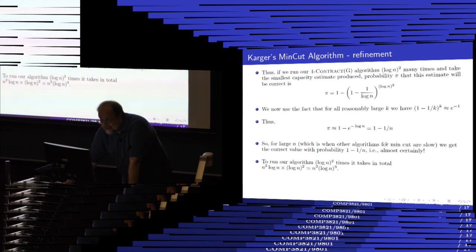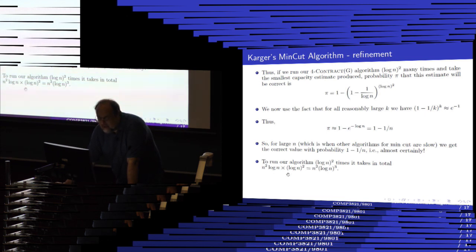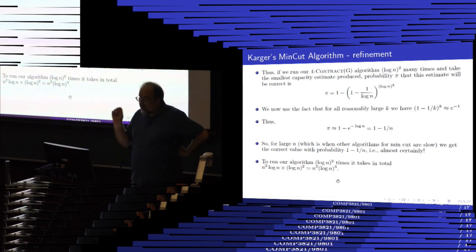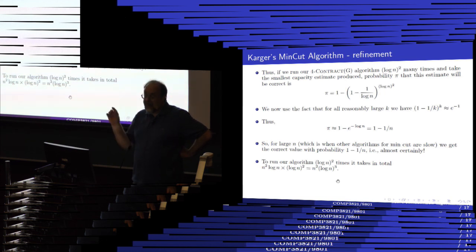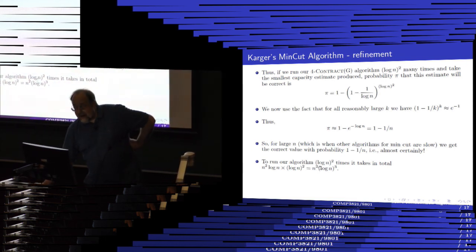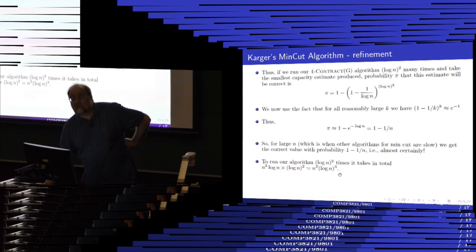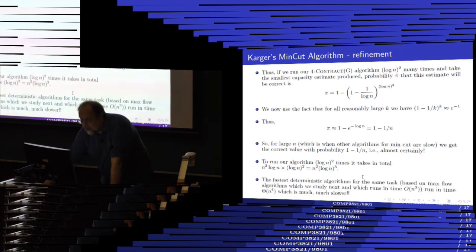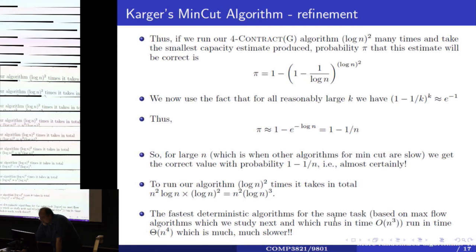So if you run your algorithm log N squared many times, you will succeed with extremely large probability if your graph is large — if your graph has a million vertices, the probability of success is 1 minus 1 over a million, essentially 1 for all practical purposes. Each run takes N squared log N steps; running it log N squared many times, you multiply to get a total runtime of N squared log N cubed. Log N is minuscule compared to N, so this is much, much better than N to the fourth that the max flow algorithm would produce.